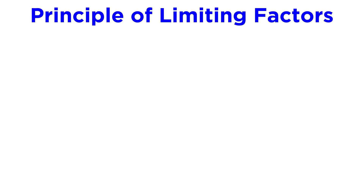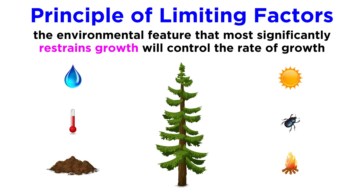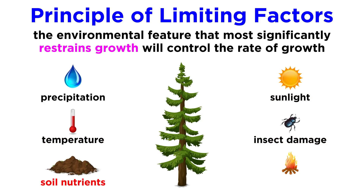The principle of limiting factors states that whichever environmental feature most significantly restrains growth, that factor will control the rate of growth for that organism. Trees are limited by many different factors, such as precipitation, sunlight, temperature, insect damage, soil nutrients, and wildfires. Dendrochronologists use this principle as a baseline when trying to determine what could be influencing growth trends in chronologies.